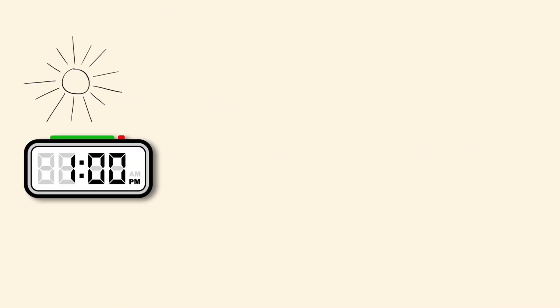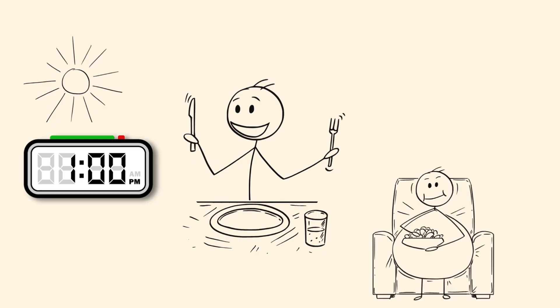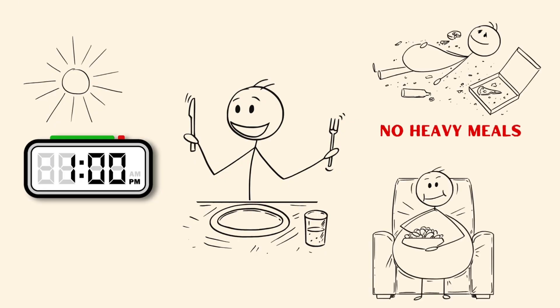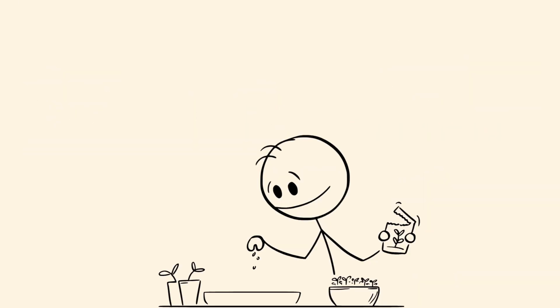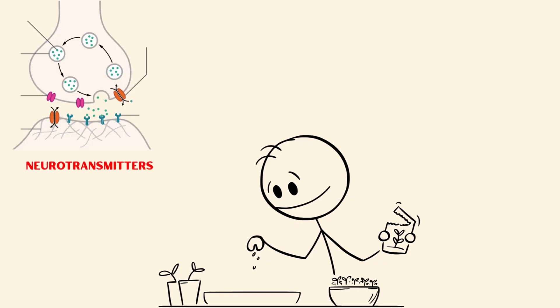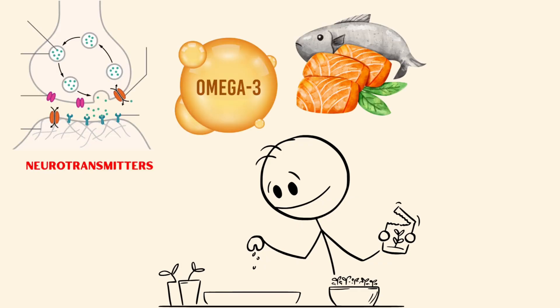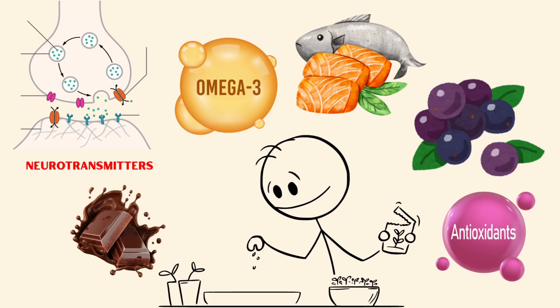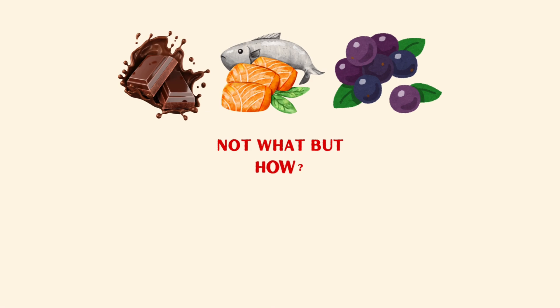Brain fuel. Eating to win. At noon, Ethan eats, but not like most people do. No heavy, greasy, crash meals. He fuels his brain with foods that support neurotransmitters, omega-3-packed salmon, a handful of antioxidant-rich blueberries, and a square of dark chocolate to boost blood flow to the brain. But it's not just what he eats, it's how.